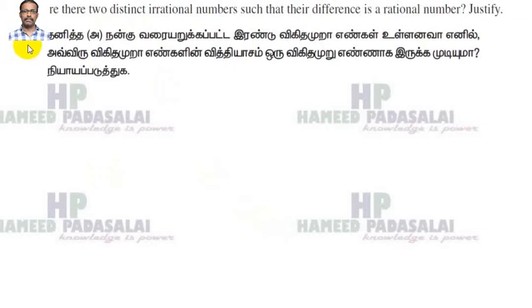Now, we are going to discuss about sum number 3. Sum number 3: are there two distinct irrational numbers such that their difference is a rational number?